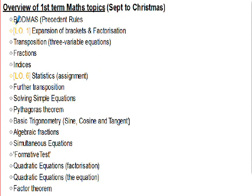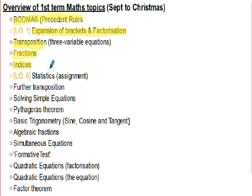We started in September with basic BODMAS precedence rules, basic expansion of brackets and factorization, and transposition — starting with three-variable equations and moving to more complicated ones. We looked at fractions, which are always an issue on the paper. We covered indices — the rules and laws of indices — all in the first few weeks of the academic year.